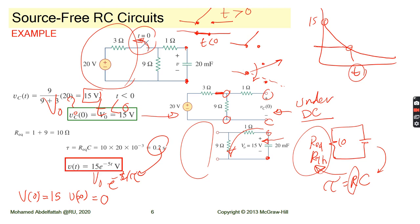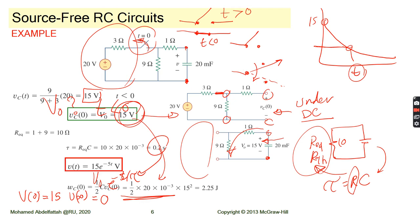If you need to find the initial stored energy in the capacitor, you have an initial voltage of 15 volts. The stored energy is (1/2)CV², giving the total stored energy. As mentioned, this stored energy will be released and dissipated in the resistor during the discharging process. The capacitor loses its energy, which is consumed in the resistor.